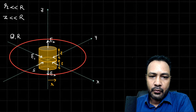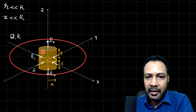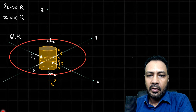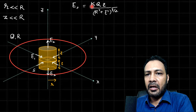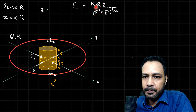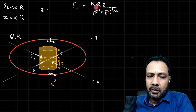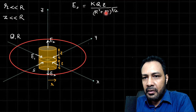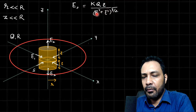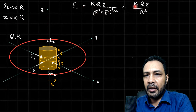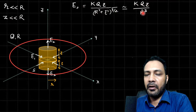Now, what is E2? E2 is the electric field on the axis at a distance z from the center. The formula for E2 is kQz divided by (R² + z²)^(3/2), where k = 1/(4πε₀). Since z is very small compared to R, we can neglect z² compared to R², and the expression simplifies to the approximation E2 ≈ kQz / R³.